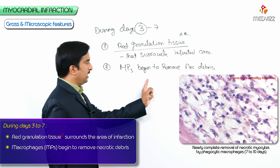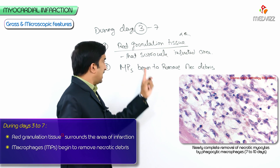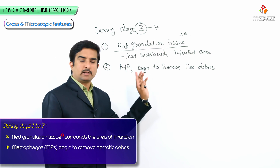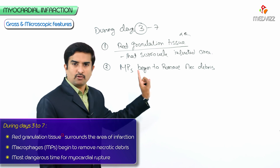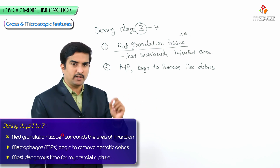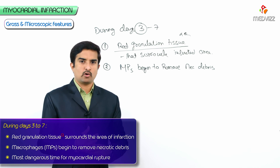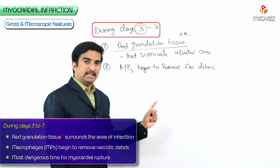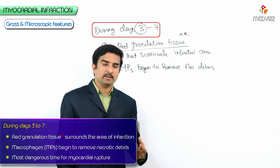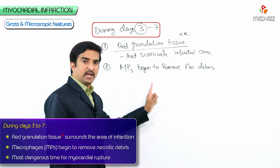This period — days 3 to 7 — is the most dangerous time for myocardial rupture to occur. Whenever a question asks about the most dangerous time after acute myocardial infarction, the answer is days 3 to 7, as this is when the myocardium is prone to rupture, which can cause cardiac tamponade and lead to sudden cardiac death.